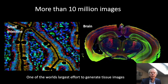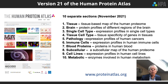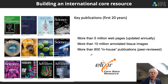We have created more than 10 million images using in-house generated antibodies, making this one of the world's largest efforts to generate tissue images. We have also created a lot of different data resources in the form of sections — today we have 10 separate sections spanning from tissues to metabolic enzymes. Right now we have more than 5 million web pages which are updated annually.